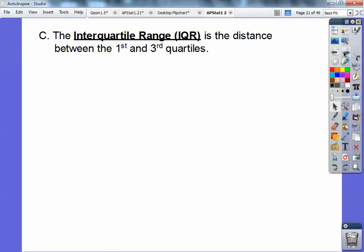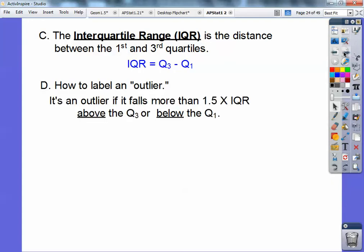All right. So the interquartile range, the IQR, is the distance between the first and third quartile. So it's Q3 minus Q1. Remember, IQR is Q3 minus Q1.